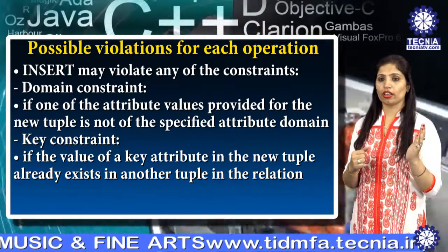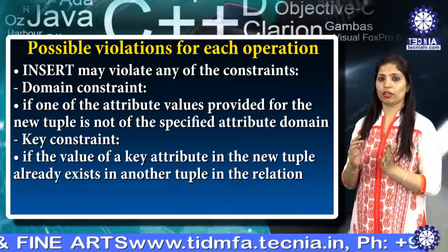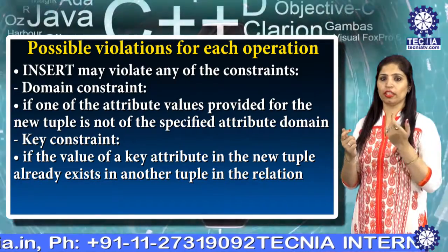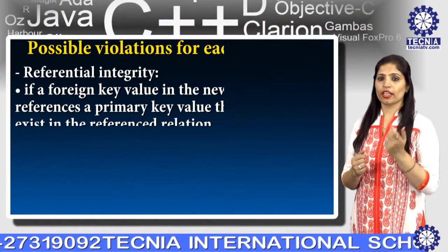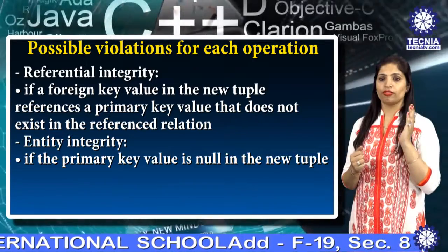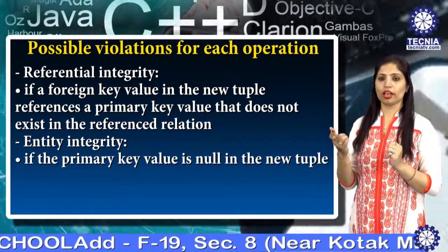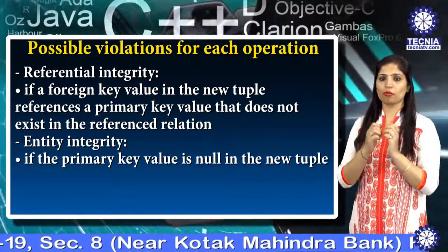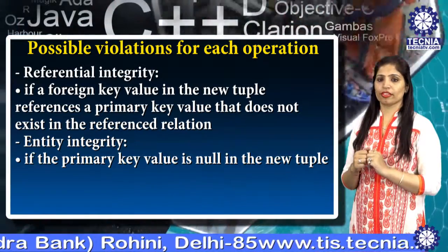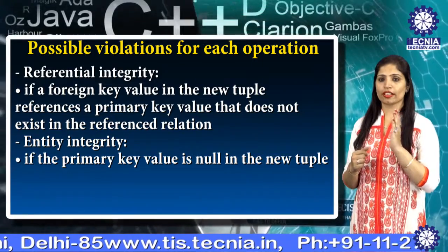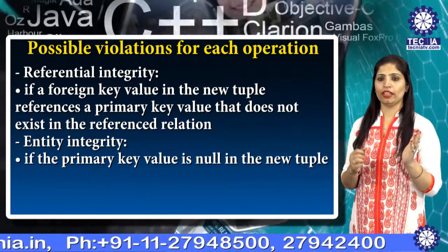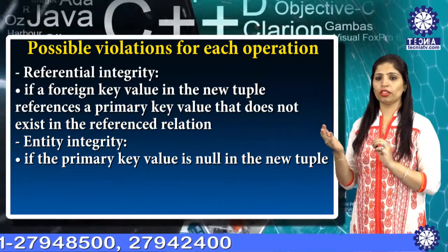Key constraint is violated if the value of a key attribute in the new tuple already exists in another tuple in the relation. Next is referential integrity: if a foreign key value in the new tuple references a primary key value that does not exist in the referenced relation. Next is entity integrity: if the primary key value is null in the new tuple.